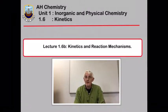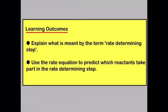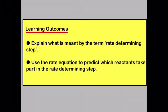In this final lecture for unit one we're going to look at the relationship between kinetics, the rate equation, and the reaction mechanism. By the end of this lecture you should be able to explain what is meant by the term rate determining step, and use the rate equation to predict which reactants take part in the rate determining step.